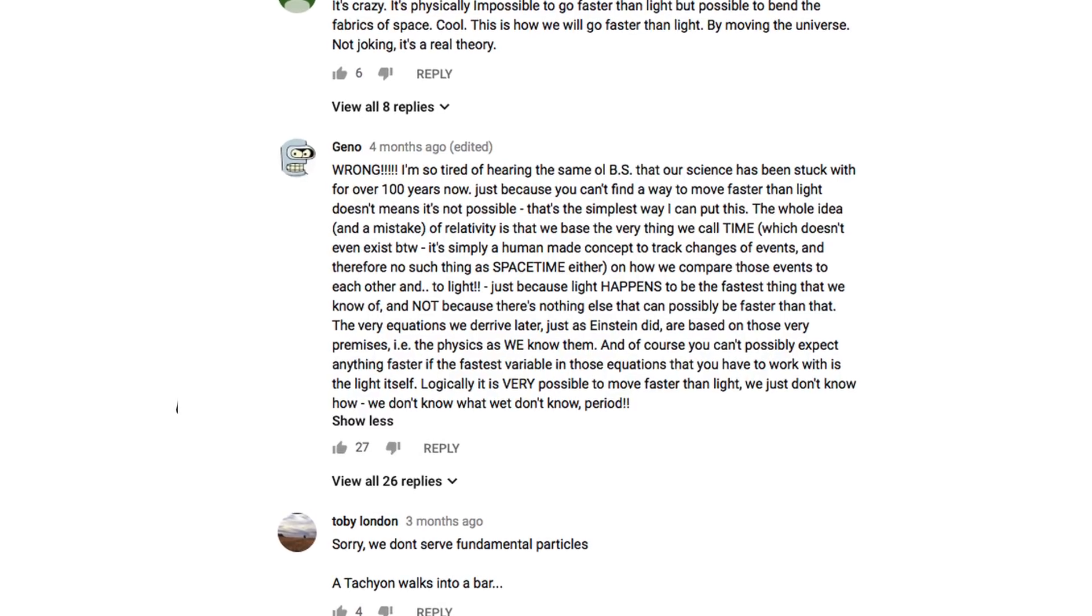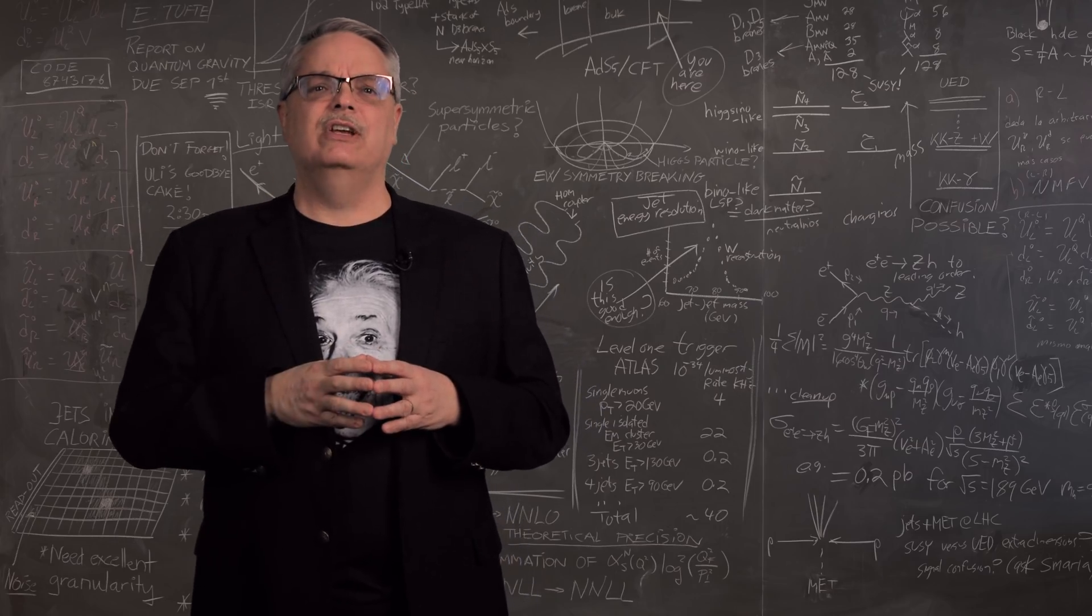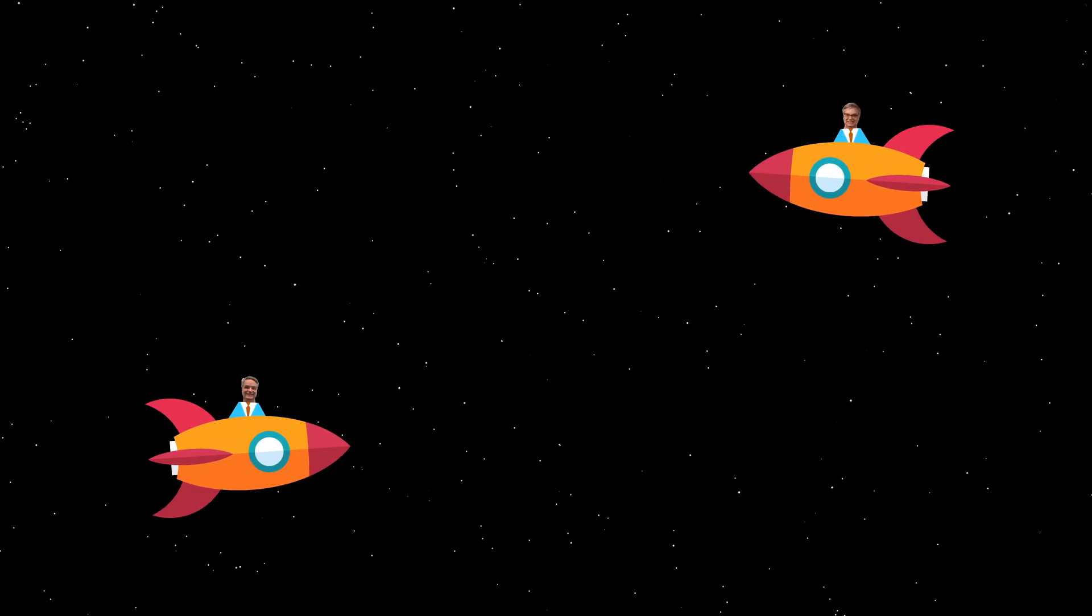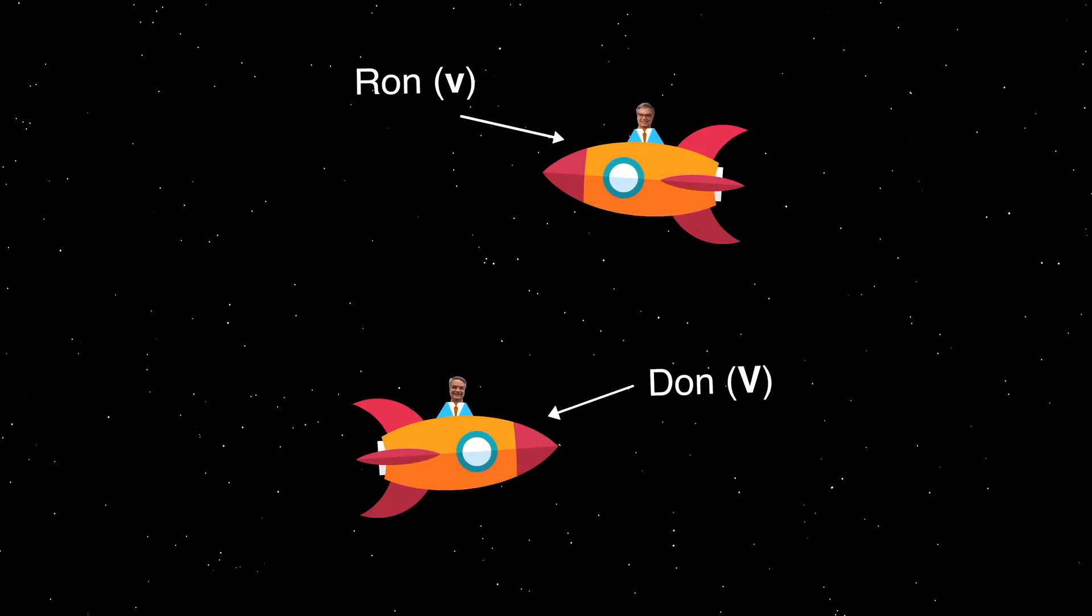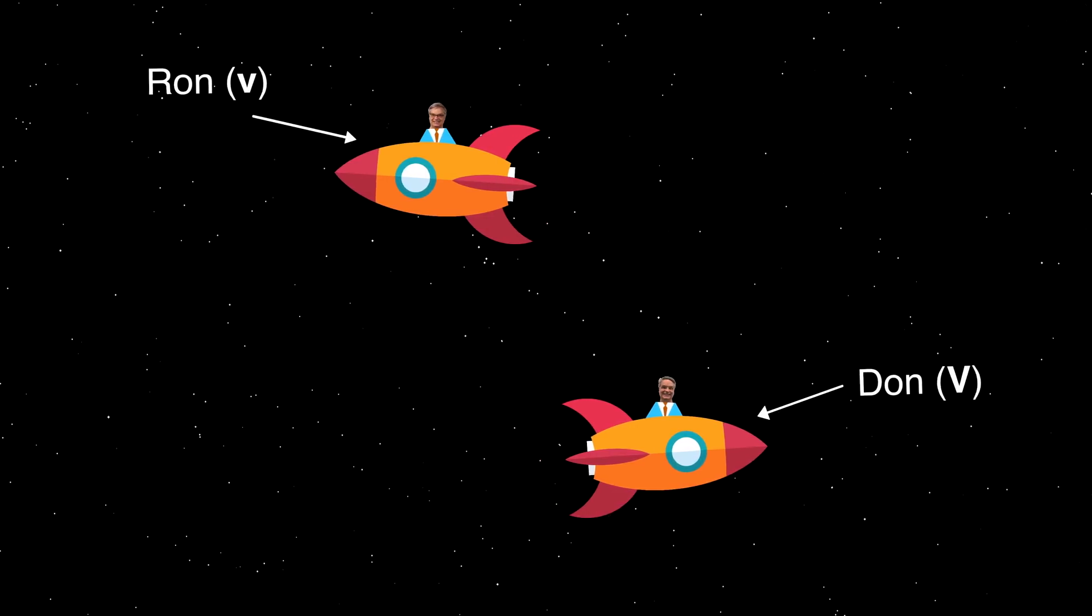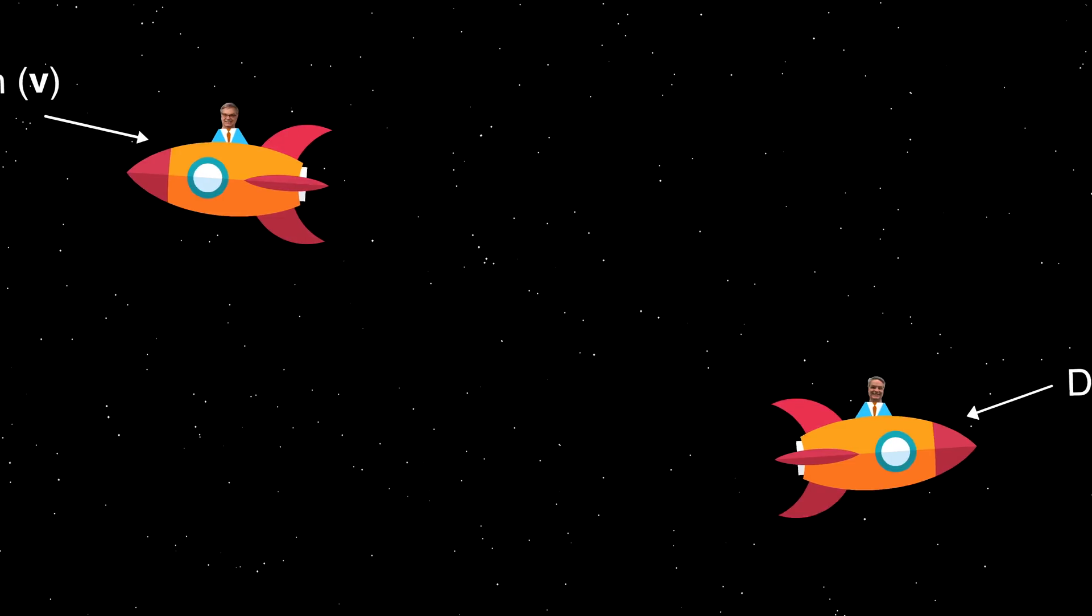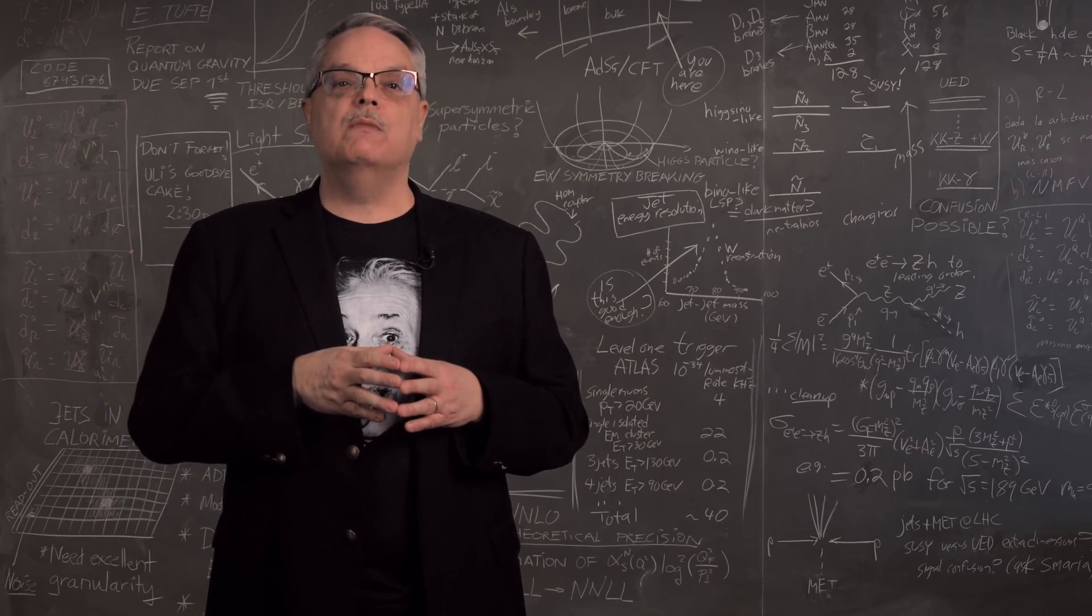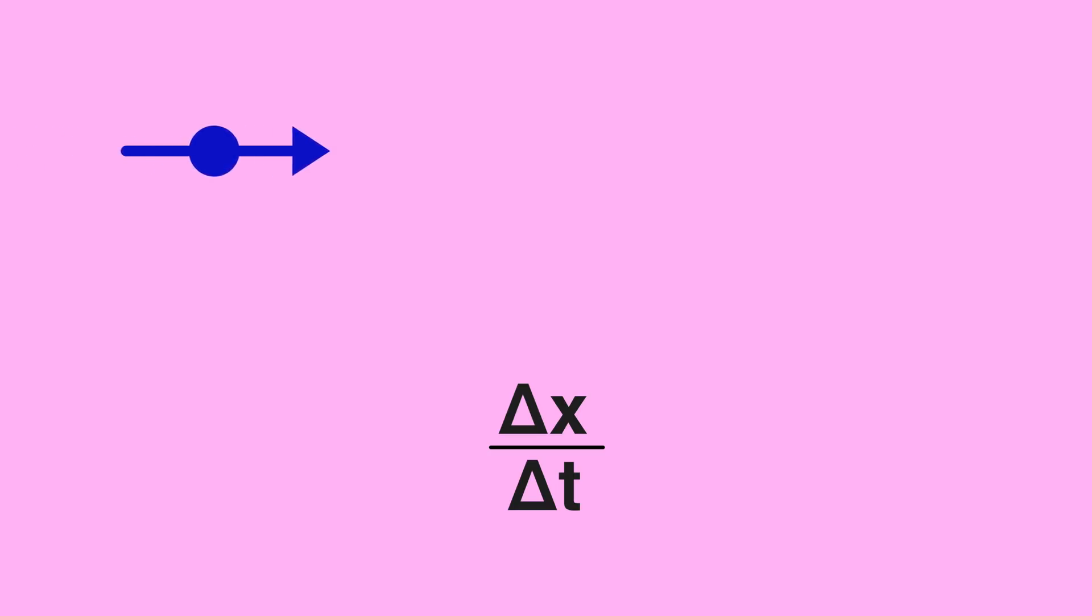So how do we do this the right way? This actually is a pretty easy derivation to do, so let's give it a go. We'll start out by setting up the problem. You have two people heading towards one another, Ron and Don. Ron is traveling with velocity little v and Don with velocity big V. Let's try to figure out how fast Ron thinks Don is going. To do this, you need to remember the definition of velocity, which is just the change in position over change in time.